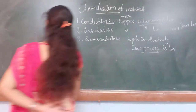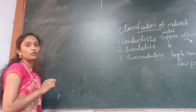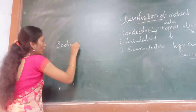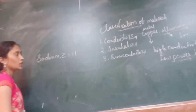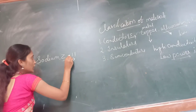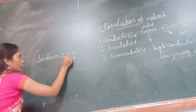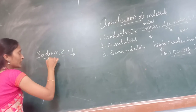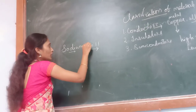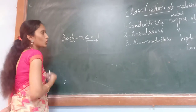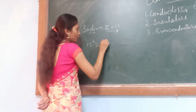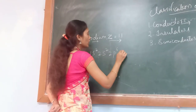Let us take an example from nature having different types of atoms. Let us take sodium, which has an atomic number of 11. To understand how this acts as a conductor, let us write the electronic configuration for sodium: 1s², 2s², 2p⁶, 3s¹.